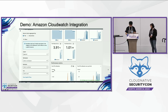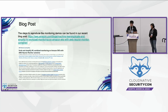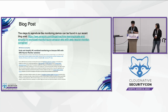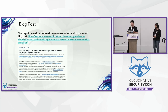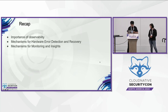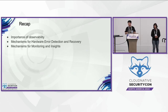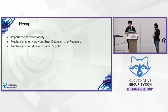That's it for the second demo. The steps to reproduce the demos are captured in a poster called 'Scale and Simplify Machine Learning Workload Monitoring on Amazon EKS with the AWS Neuron Monitor Container,' which we recently posted — feel free to check it out if you want to reproduce it yourself. To recap this session: we introduced the importance of observability of running AI workloads in Kubernetes, the mechanisms for hardware error detection and recovery, and the mechanisms for monitoring and insights.